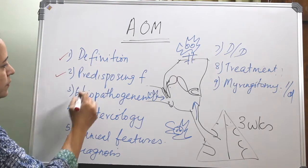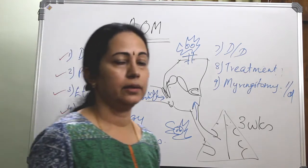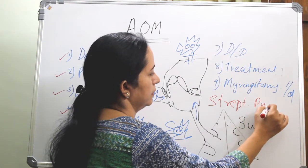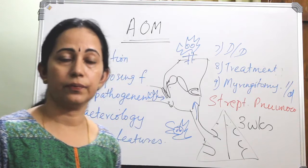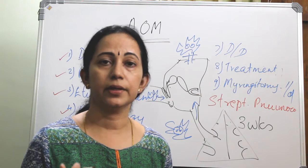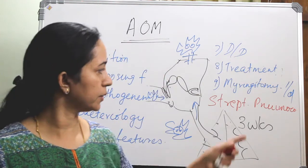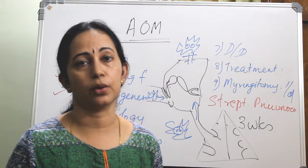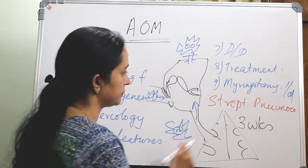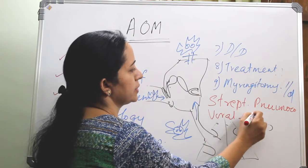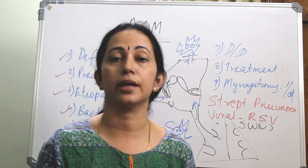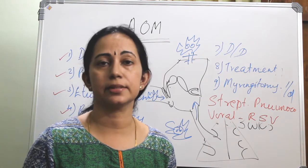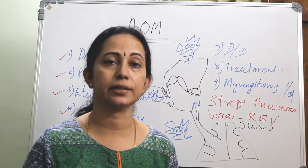What about the bacteriology? The commonest organism is Streptococcus pneumoniae — that is why a trial of pneumococcal vaccination or influenza vaccines will reduce the occurrence of acute otitis media. It is also caused by H. influenzae and Moraxella catarrhalis. Viral etiology includes respiratory syncytial virus, rhinovirus, and adenovirus.